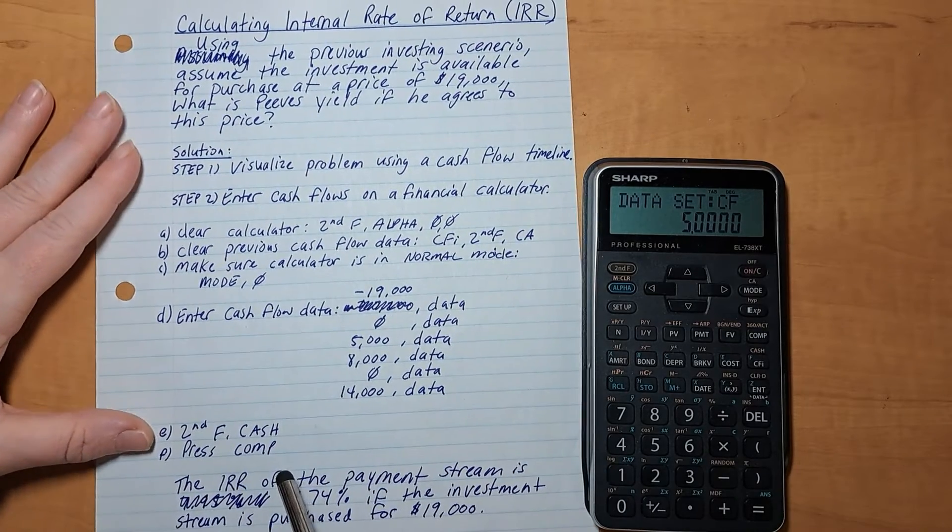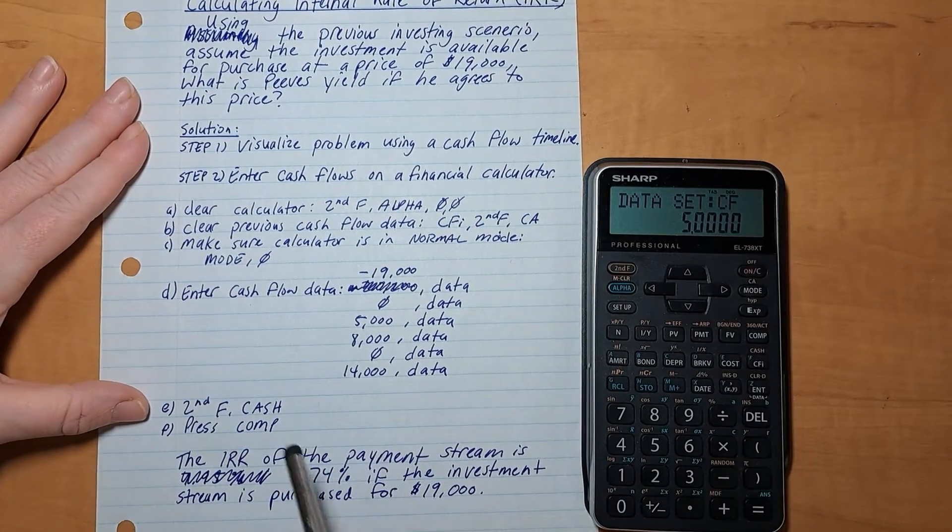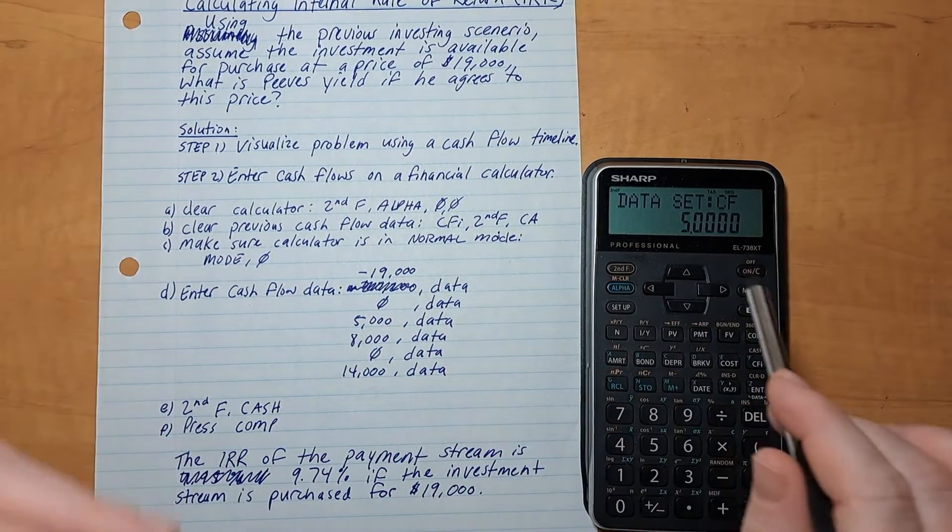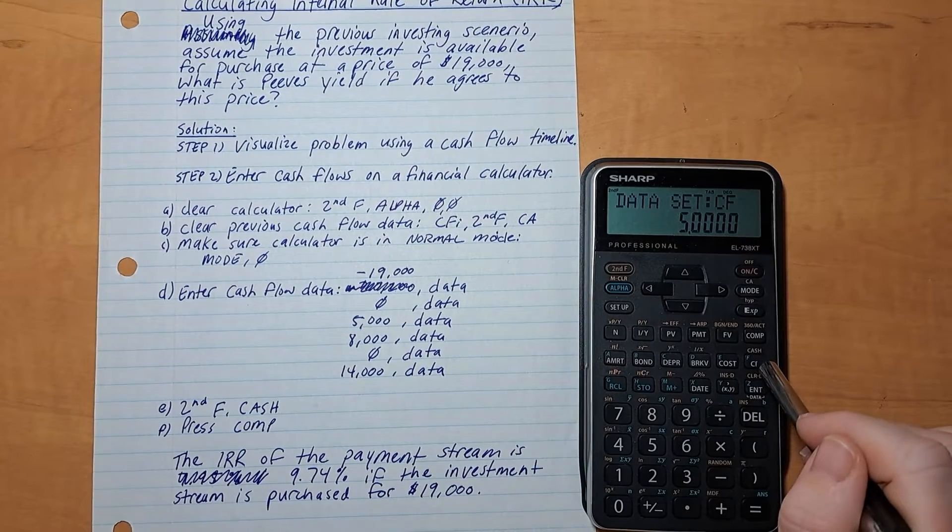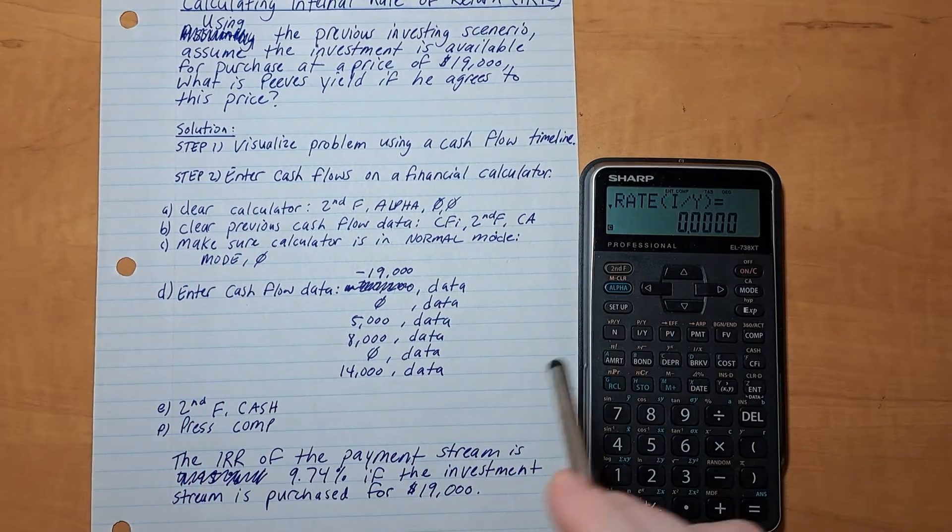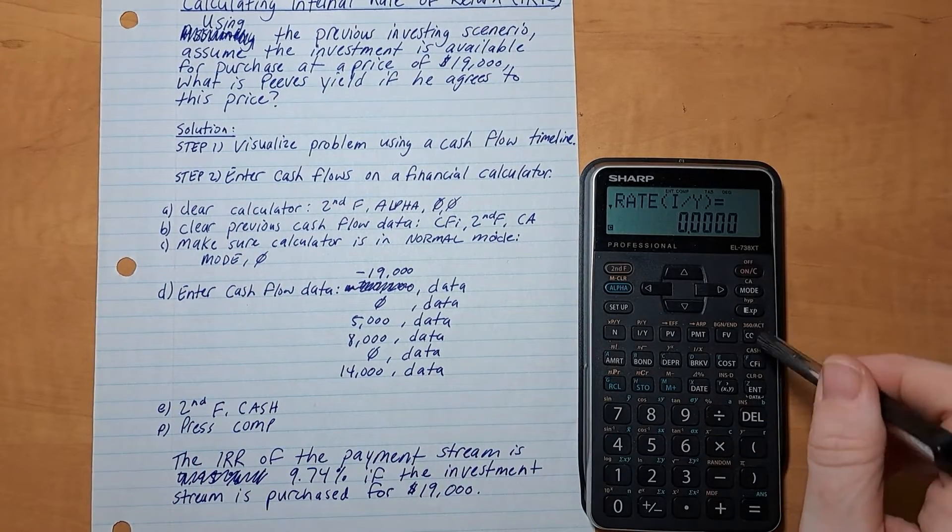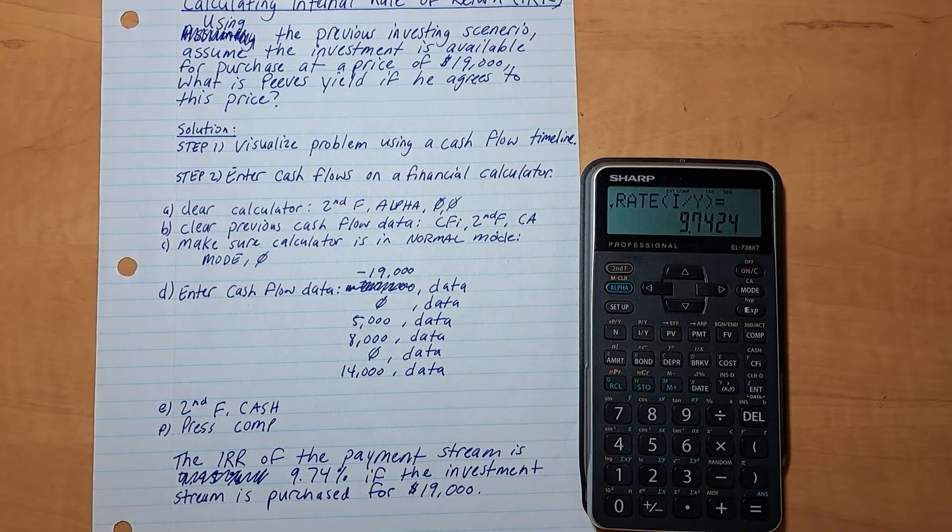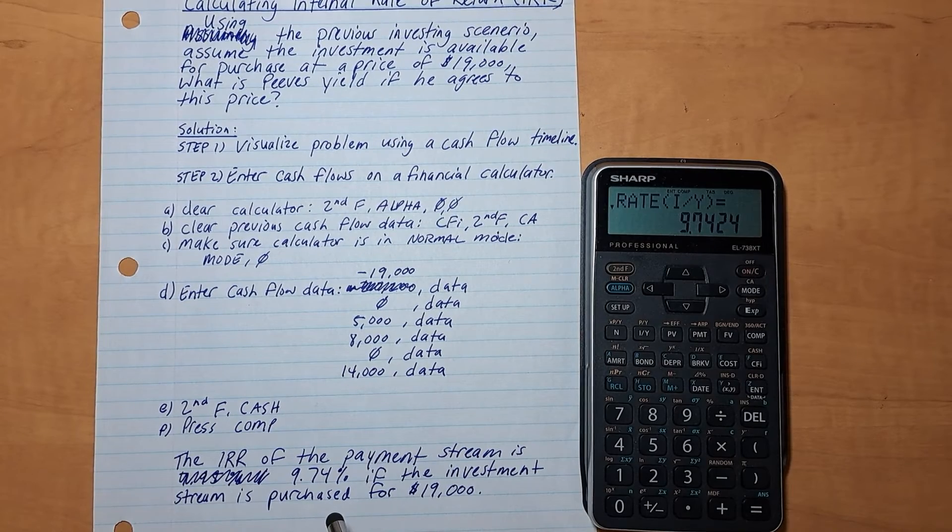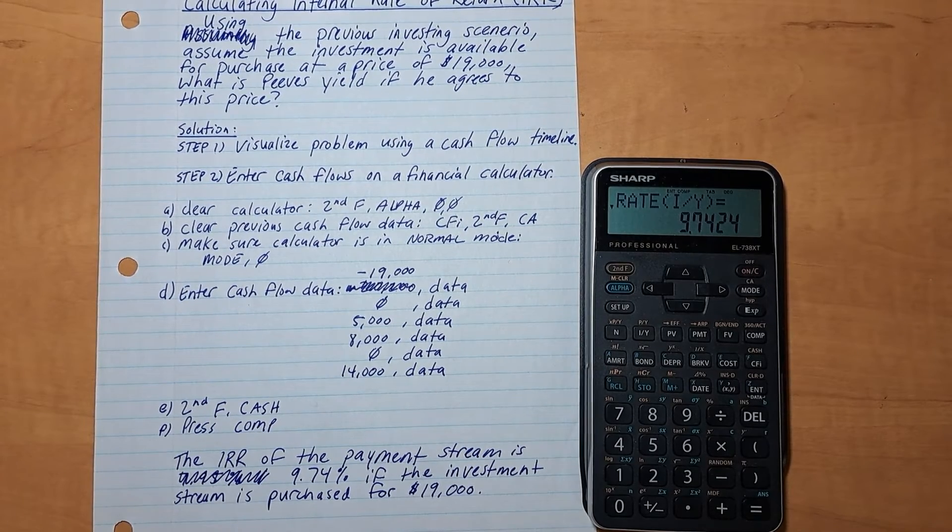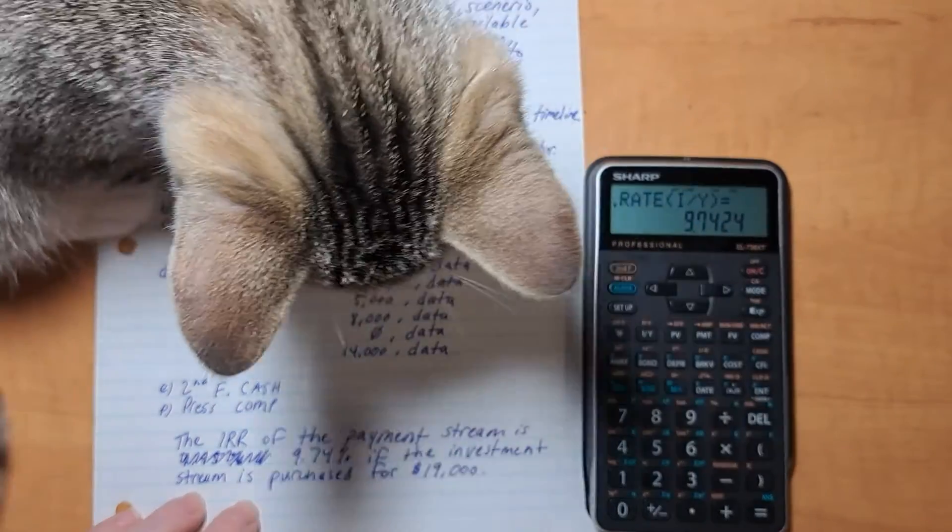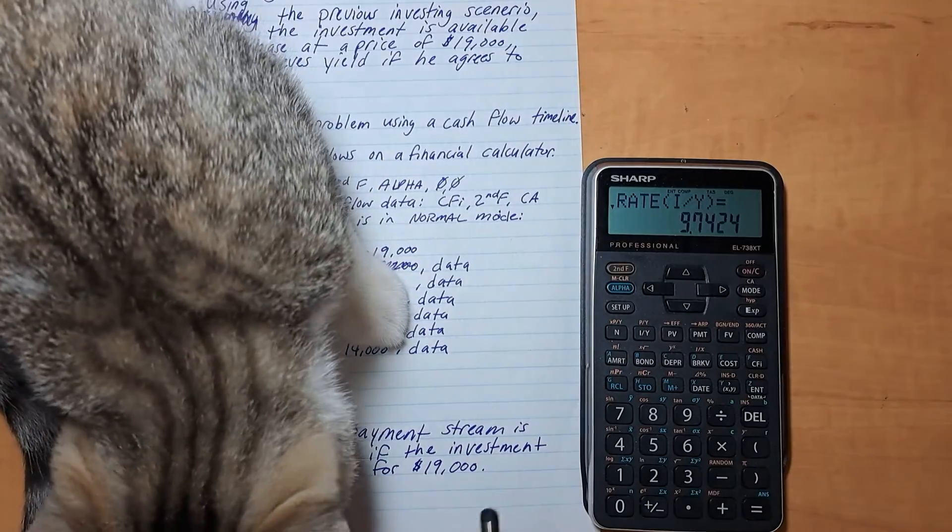And now you want to hit the second function and cash. So the next step, now that all of our data is entered, it's second function cash, which is also the CFI button. We want to calculate this internal rate of return, so we hit compute and it is 9.74. So the IRR of the payment stream is 9.74% if the investment stream is purchased for $19,000. So that's his internal rate of return, 9.74%.